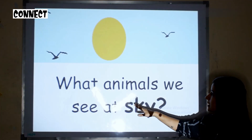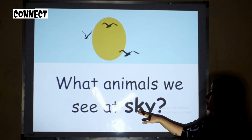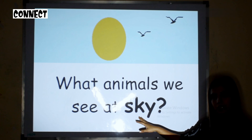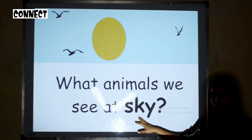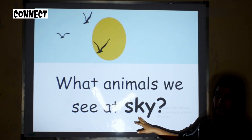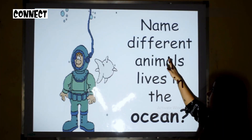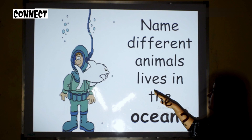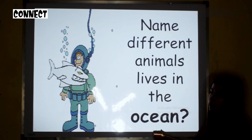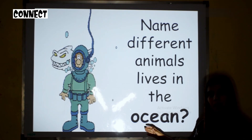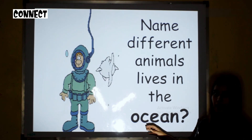In this slide we have asked what are the animals we see in the sky, so children will give different examples of sky animals. Then we have asked to name different animals that live in the ocean, so children will give different examples of water animals.